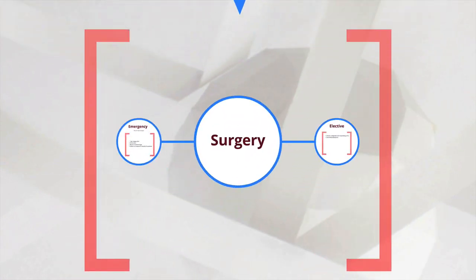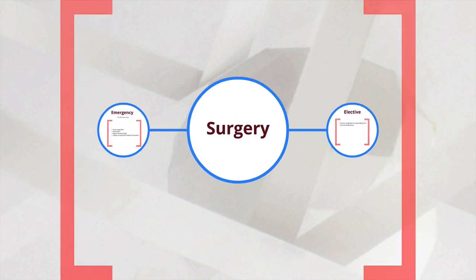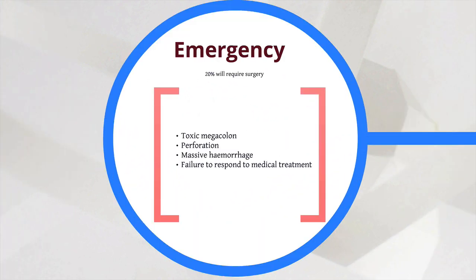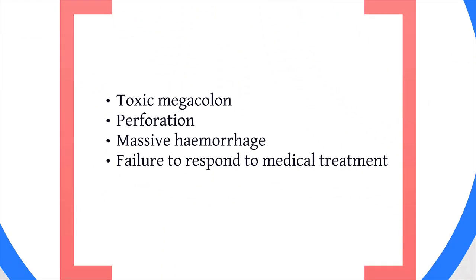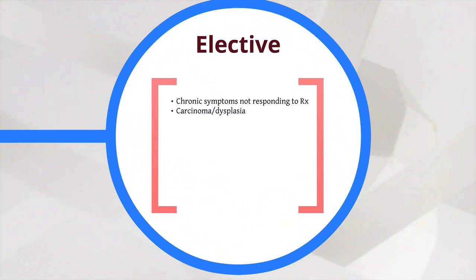Finally, surgery is very common for UC patients, either in an emergency or elective setting. Around 20% of patients with UC will require surgery at some time. Emergency indications include toxic megacolon, perforation, massive haemorrhage, and failure to respond to oral or topical therapies. Elective surgery may be due to chronic symptoms not responding to treatment, or for colonic carcinoma or dysplasia, which is often associated with ulcerative colitis.